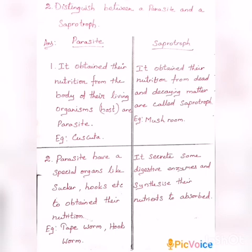Parasite: It obtains its nutrition from the body of a living organism — that means it takes food from a living host organism. The organism it lives on is called the host. Saprotroph: It obtains its nutrition from dead and decaying matter. Example: Mushroom.